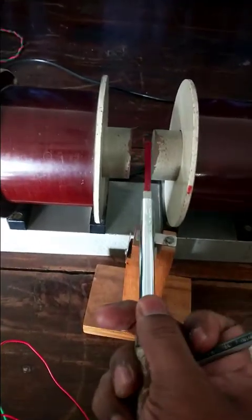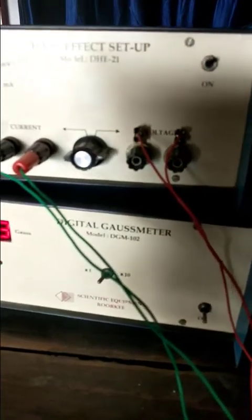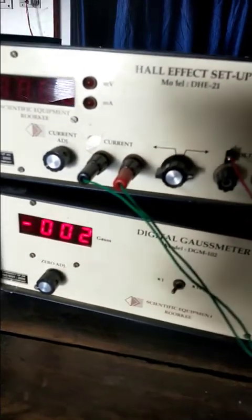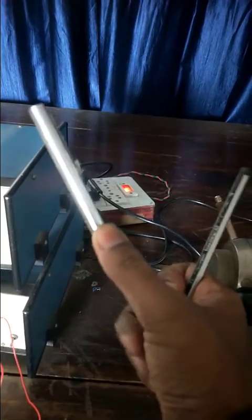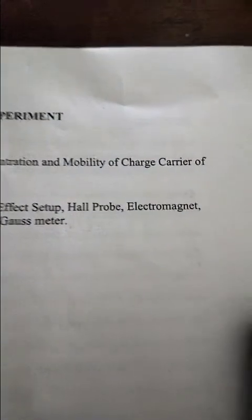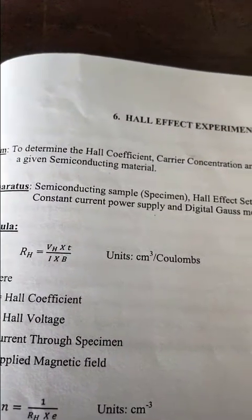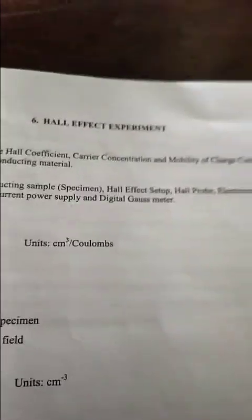These are the electromagnets. In between, I'm going to place this probe and measure in gauss using the digital gauss meter. We're going to measure how much magnetic field is being produced using this probe. The manual shows the Hall probe and electromagnets, constant current power supply, and a digital gauss meter.